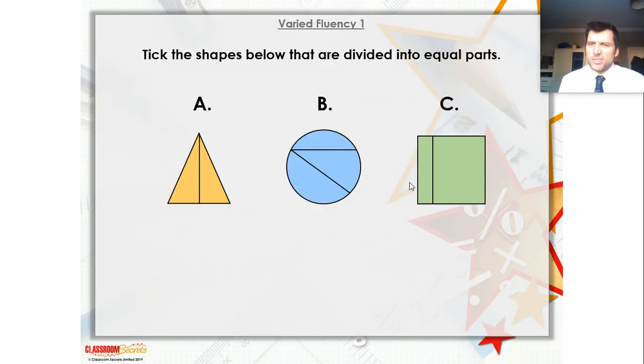Now, sometimes it's not possible to divide either values of numbers or shapes into equal parts. Some of these shapes have not been successfully divided into equal parts. Some of them have, or one of them has. So which one has been divided successfully into equal parts? Is it A, the triangle? Is it B, the circle? Or is it C, the square? Pause your video while you think. Are they all the same, the parts that it's been split into?